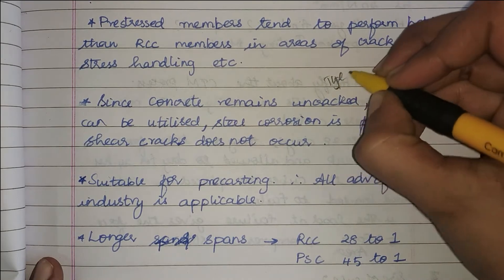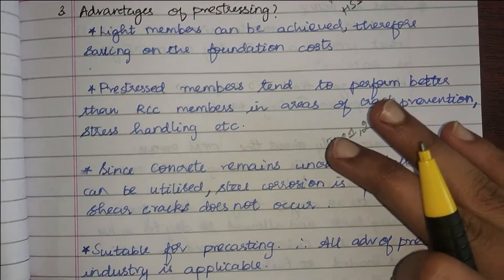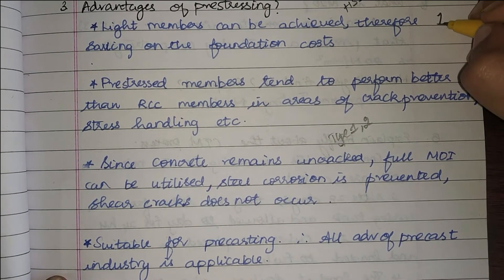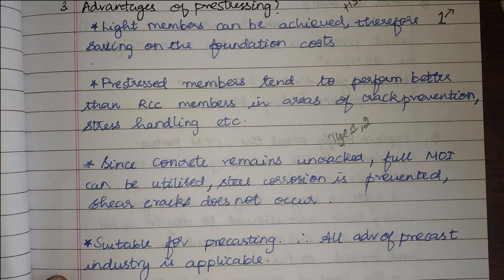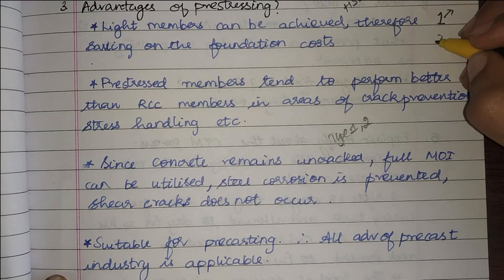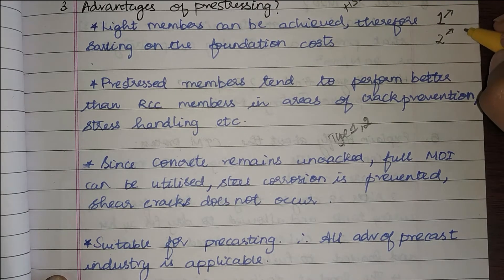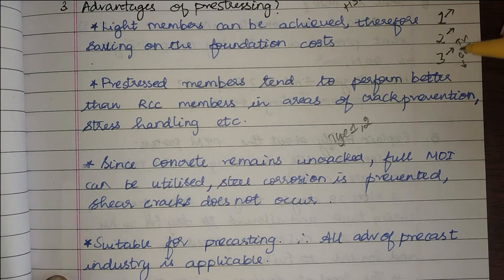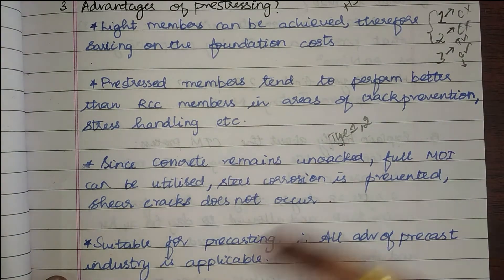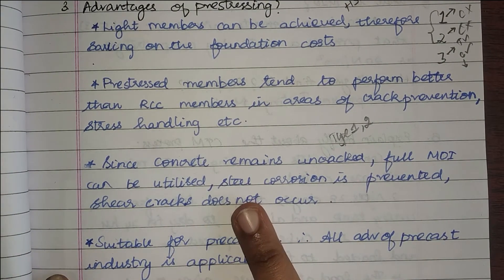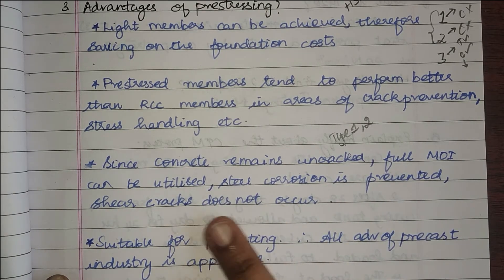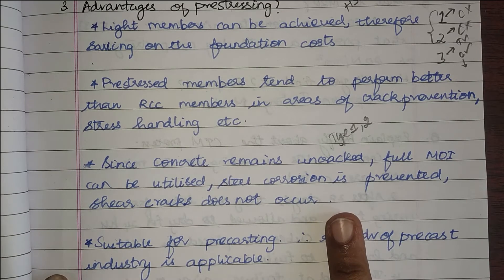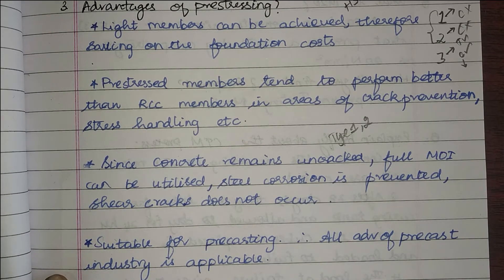There are three types of pre-stressed concrete members. In Type 1, no tension and no cracking are allowed. In Type 2, cracking is not allowed but some tension is permitted. In Type 3, both tension and cracking are allowed within permissible limits. In Type 1 and Type 2, since there are no cracks, the full moment of inertia can be utilized, steel corrosion is prevented, and shear cracks do not occur — making them very useful for water-retaining structures like tanks.